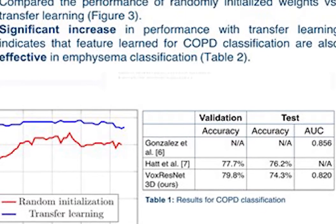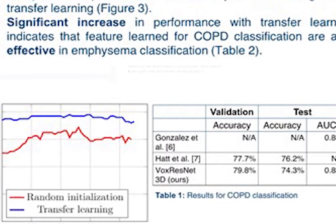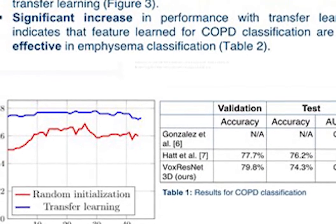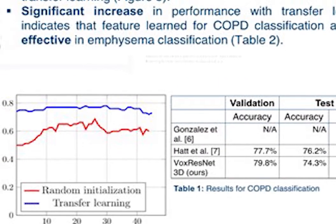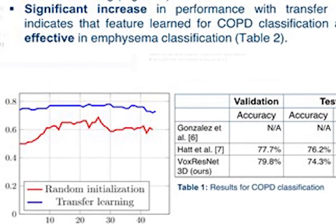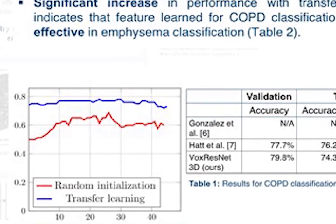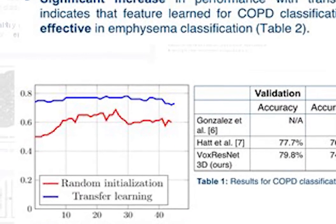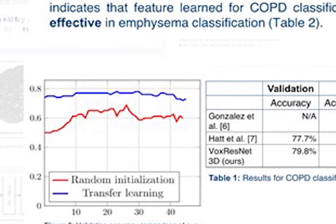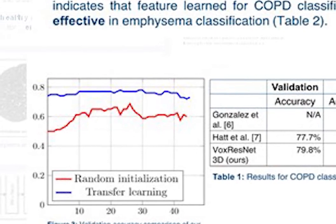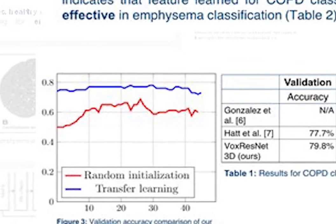In the next step, we trained for emphysema versus non-emphysema classification. The non-emphysema class comprised all healthy samples and any other patients with lung disease other than emphysema. We compared performance by training the network first with randomly initialized weights, and secondly with the pre-trained weights from COPD classification.